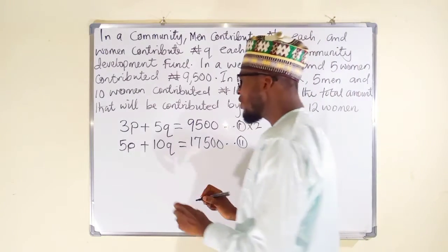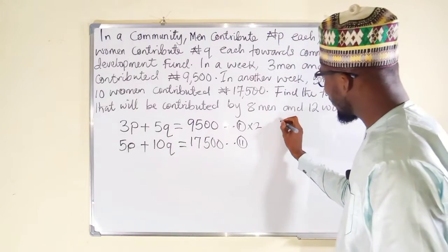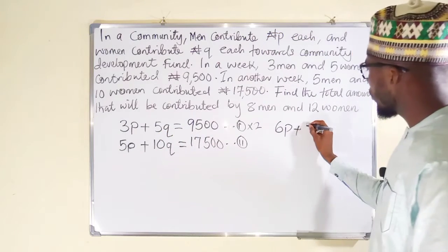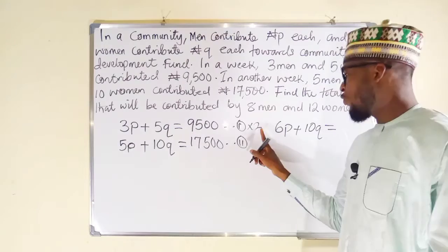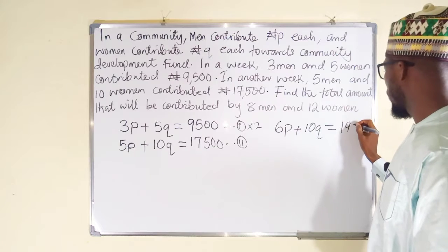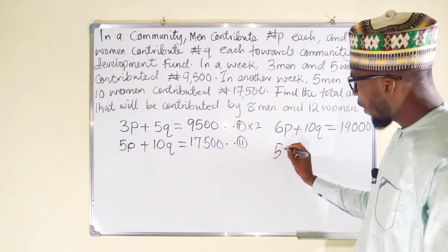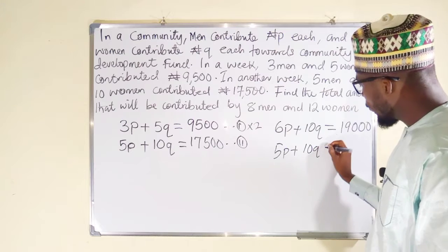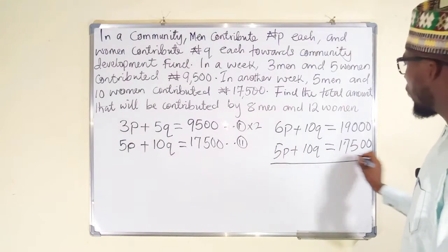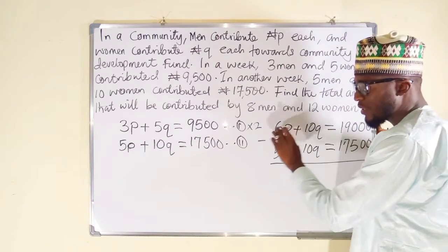Multiplying the first equation by two: 2 multiplied by 3P is 6P, plus 2 multiplied by 5Q is 10Q, and this equals 2 multiplied by 9,500 which is 19,000. So our modified equation is: 6P + 10Q = 19,000. We bring down the second equation: 5P + 10Q = 17,500. Now we can subtract equation two from the modified equation one.